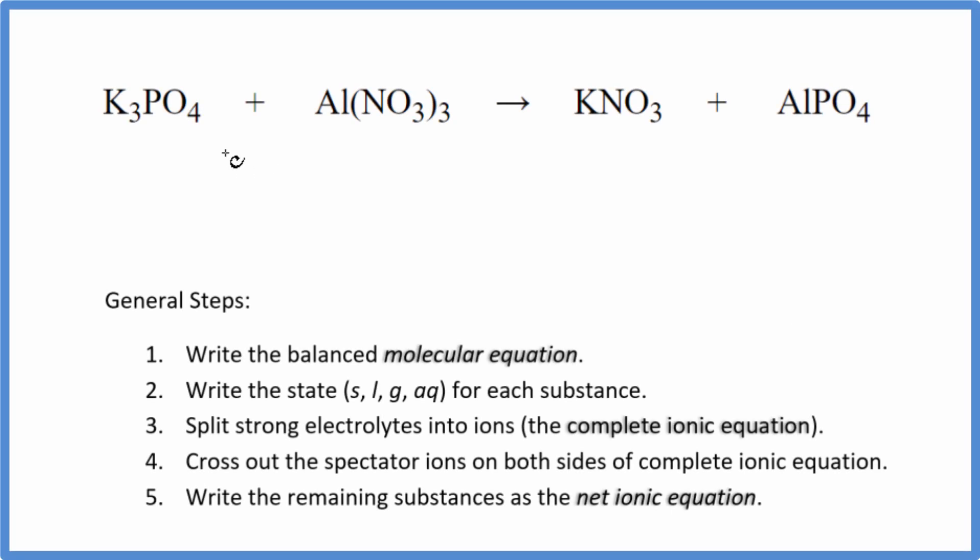In this video, we'll write the balanced net ionic equation for K3PO4 plus Al(NO3)3. This is potassium phosphate. This is aluminum nitrate.